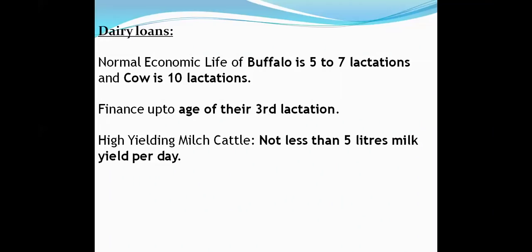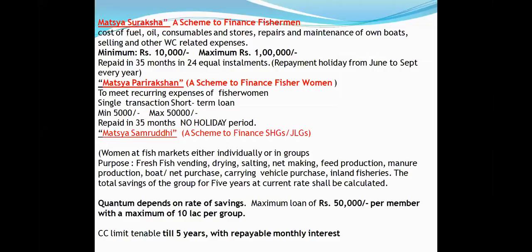Dairy loans: a buffalo gives 5–7 lactations in its lifetime; a cow gives 10 lactations. Bank can finance up to the 3rd lactation only. Definition of high-yield cattle: any animal giving 5 liters of milk per day is called high-yield milk cattle.